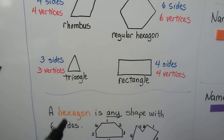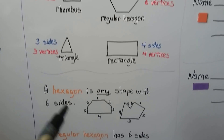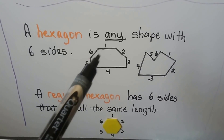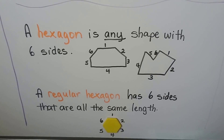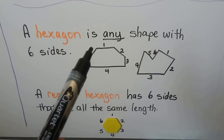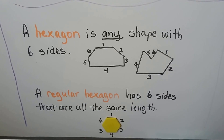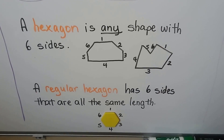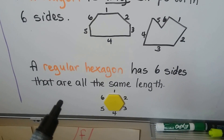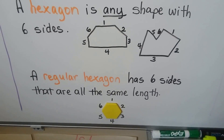Now, a regular hexagon is not the same thing as just a hexagon, because a hexagon is any shape with six sides. Did you know that those irregular shapes are hexagons? They are hexagons because they have six sides each. But a regular hexagon has six sides that are all the same length. That's a regular hexagon.